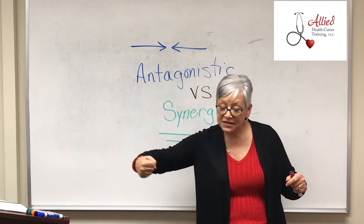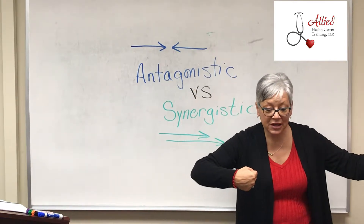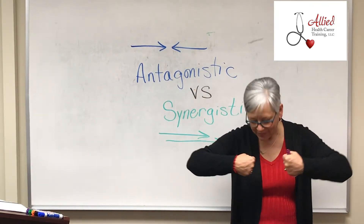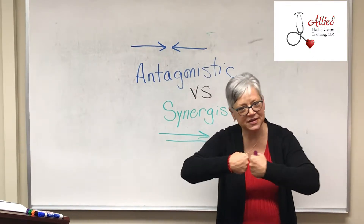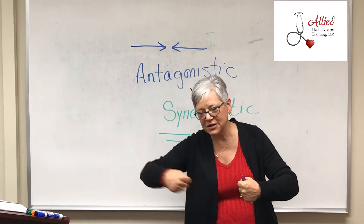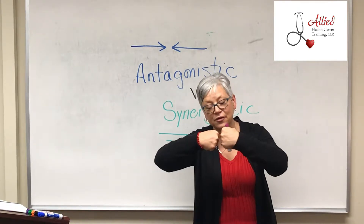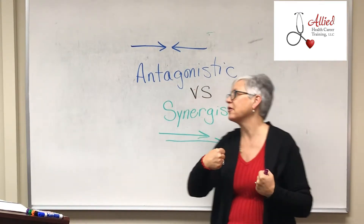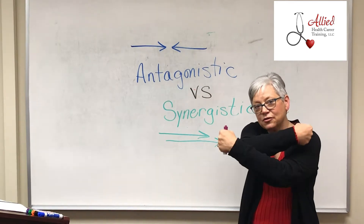Another example of antagonistic meds: you take a sleeping pill and then you drink a cup of coffee. Antagonistic — one is wanting to speed you up, one is wanting to slow you down. They're antagonizing each other, opposing each other, going in the opposite direction.